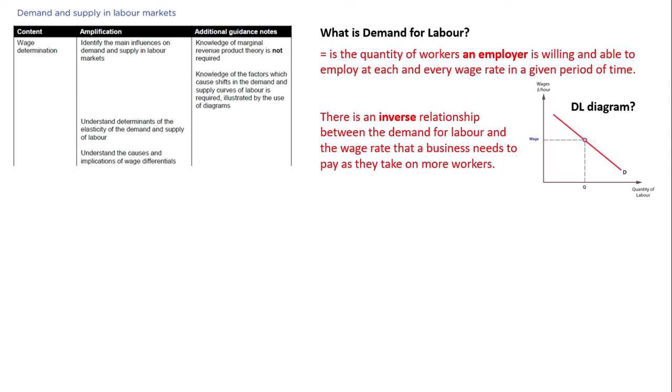There are two reasons for that inverse relationship: the income effect and the substitution effect. Income refers to the profit a business has — if it remains constant and the wage rate goes up, they can't feasibly employ as many workers, so they have to let some go. The substitution effect is the idea that as the wage rate increases, employers will seek either cheaper workers or invest in capital equipment, substituting their factor inputs.